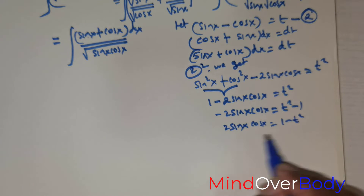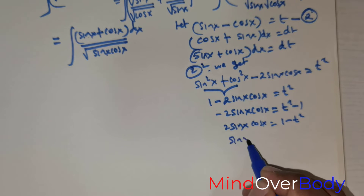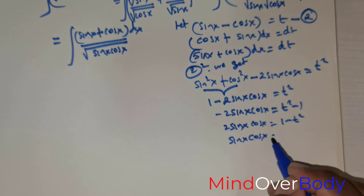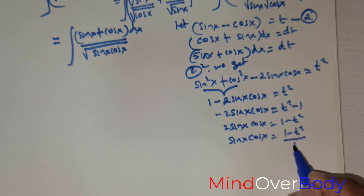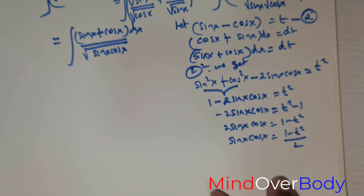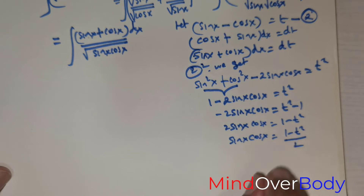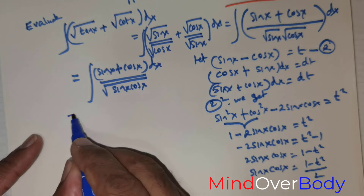We don't want the factor of 2, so dividing both sides by 2, we get sin x cos x = (1 − t²)/2. In place of sin x cos x in the denominator, we substitute this expression.